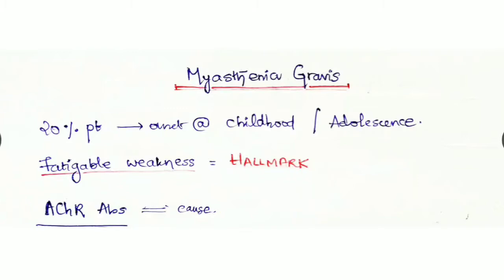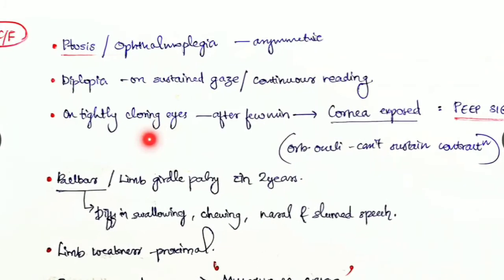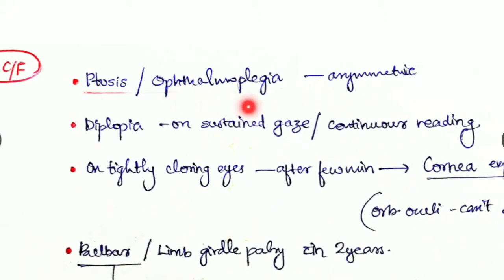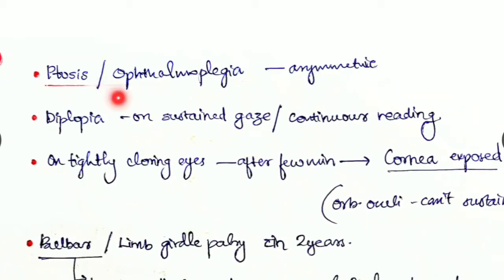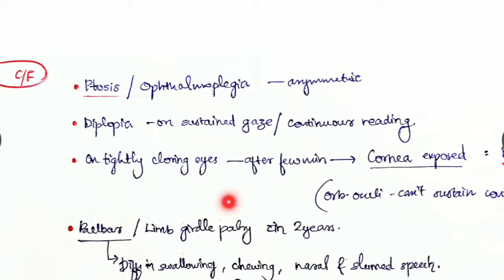The clinical features are mainly ptosis or ophthalmoplegia which are asymmetric, seen as the first symptom. The extraocular muscles are very weak so they get more easily fatigued than any other muscles. Another sign is diplopia on sustained gaze or continuous reading due to extraocular muscle weakness.